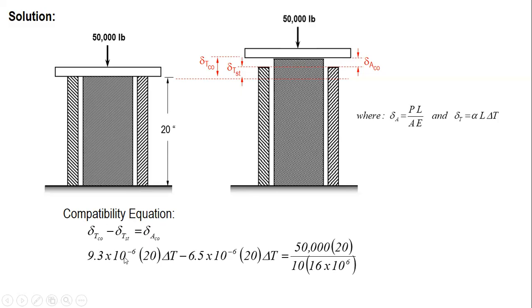We substitute the expressions of thermal and axial deformation. And then substitute values also. So for copper, the alpha is 9.3 times 10 raised to negative 6 per degree Celsius. The length is 20 inches. Change in temperature. Minus for steel. This is the coefficient of thermal expansion, L delta T. And axial deformation of copper, P is 50,000, length is 20, original length, area 10, and modulus of elasticity 16 times 10 raised to 6.